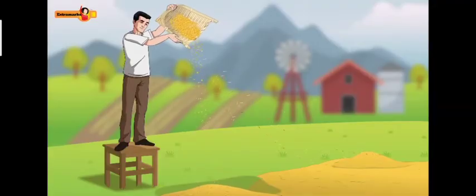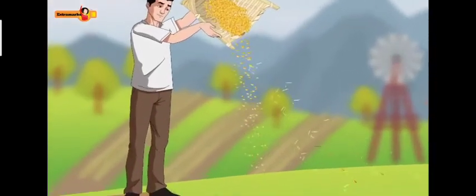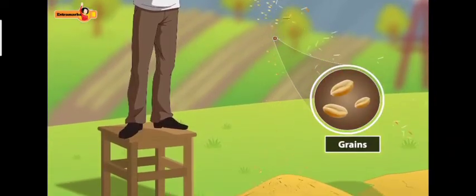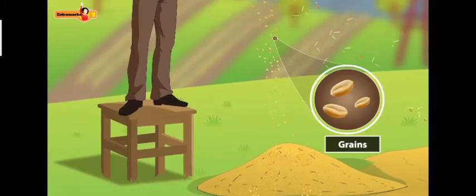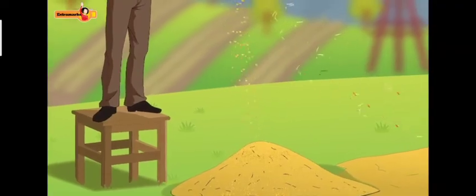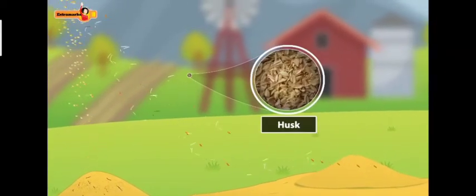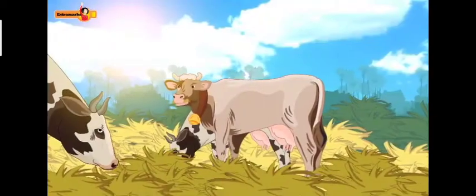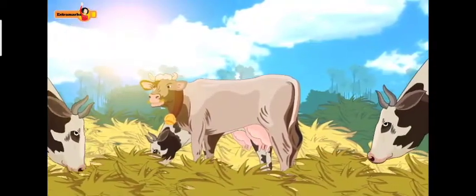In the winnowing process, a mixture of wheat grains and husk is allowed to fall from a height. The wheat grains being heavier fall vertically down to form a heap. Husk being lighter is carried away by the wind and forms a separate heap at a distance. The separated husk is used as fodder for cattle.